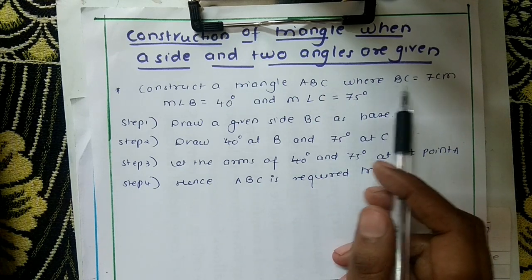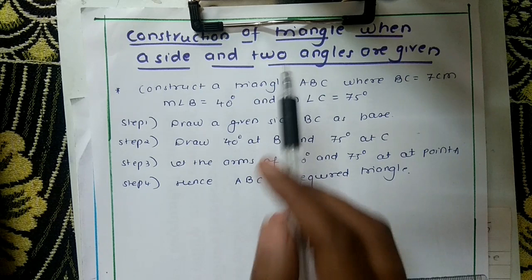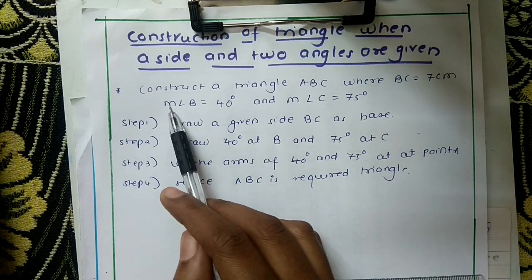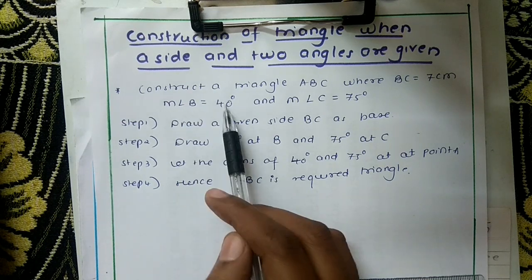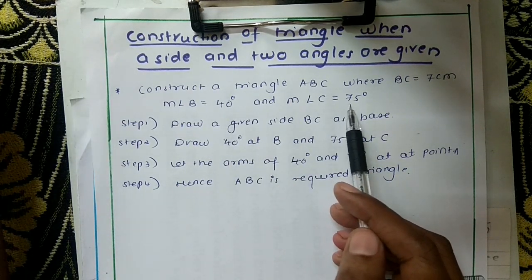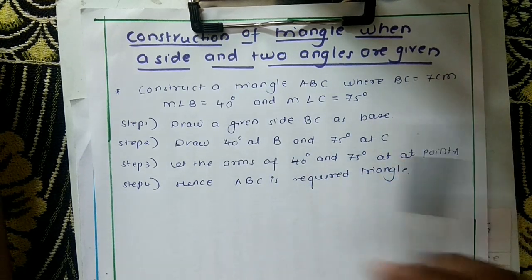Where BC is one of the sides, given as 7 centimeters, and two angles: measurement of angle B is 40 degrees and measurement of angle C equals 75 degrees. Here the base angles are given and the base is BC.